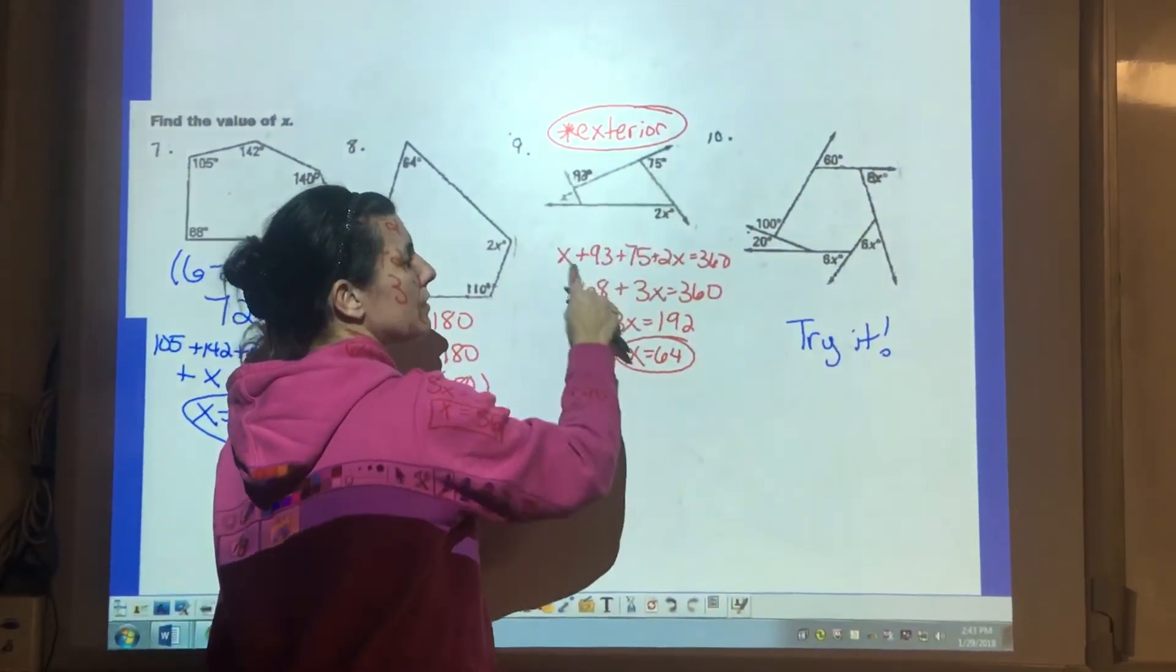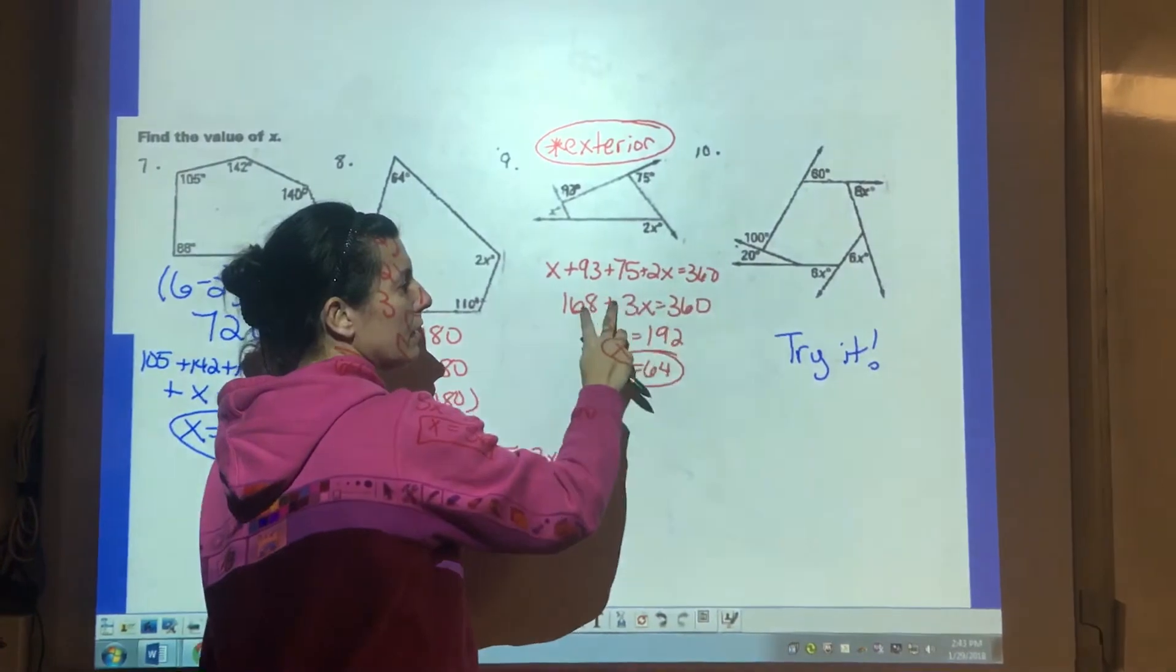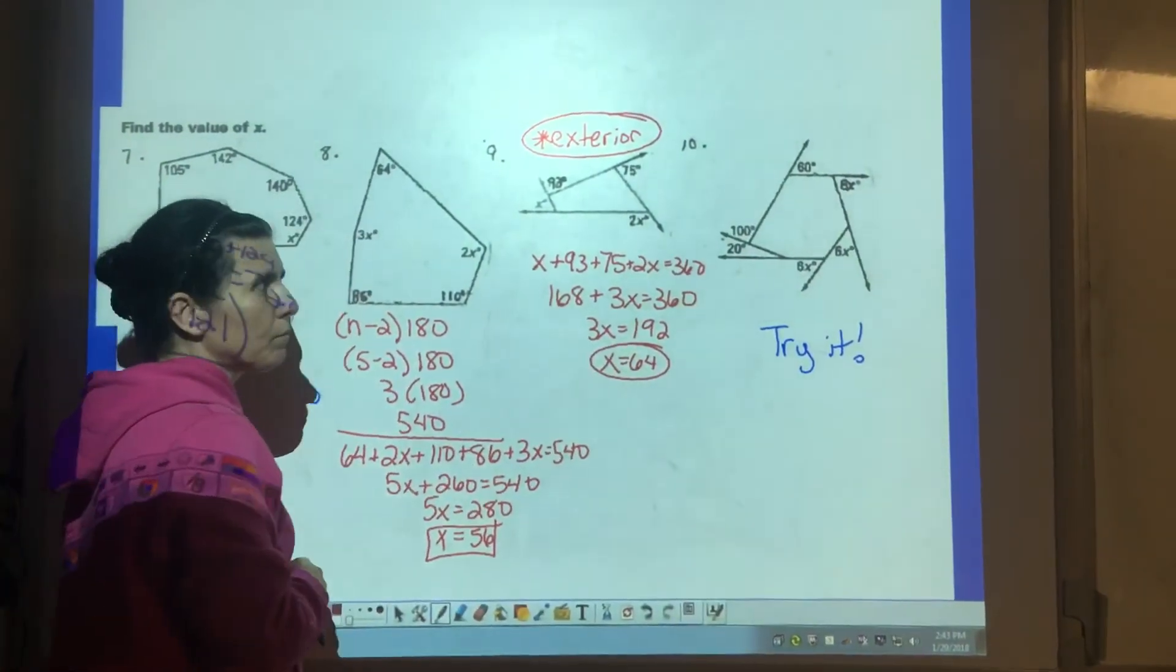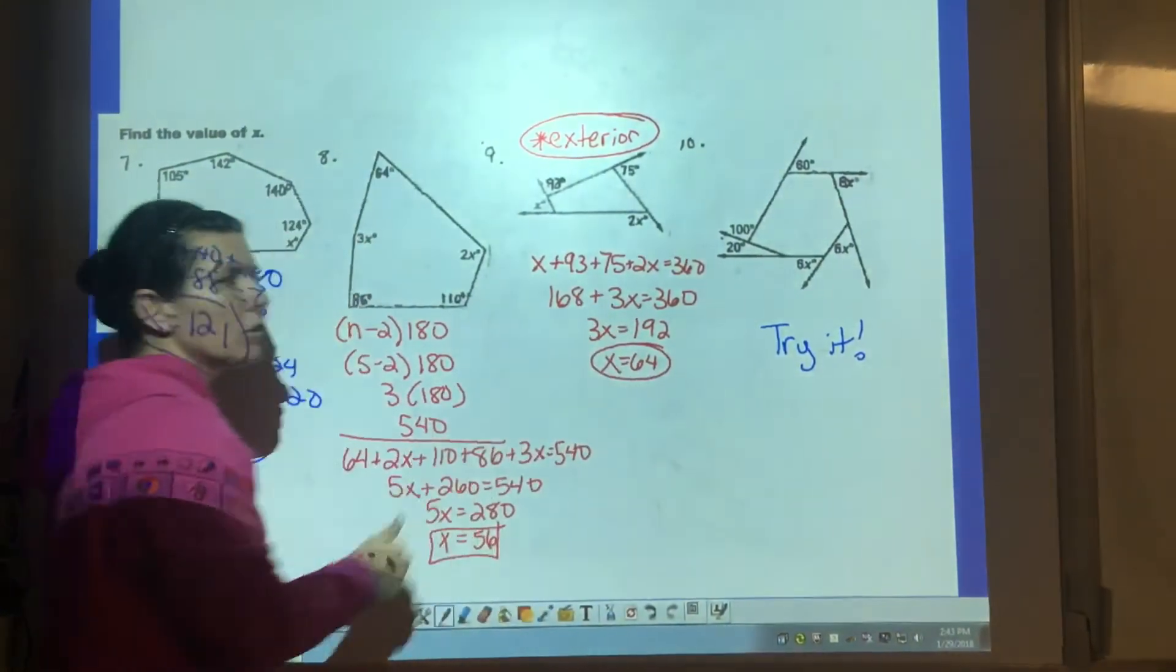So I took all of these exterior angles and set them equal to 360. Simplified and solved. x is 64. Try number 10. Very similar to number 9.